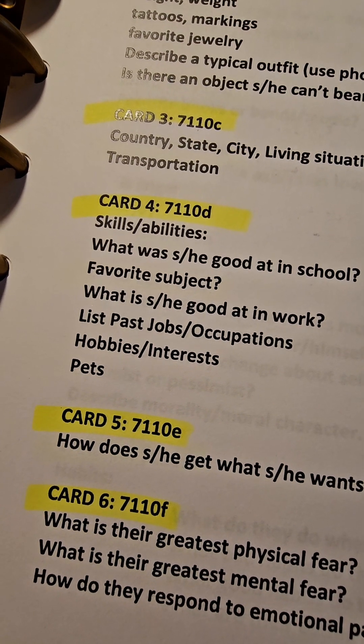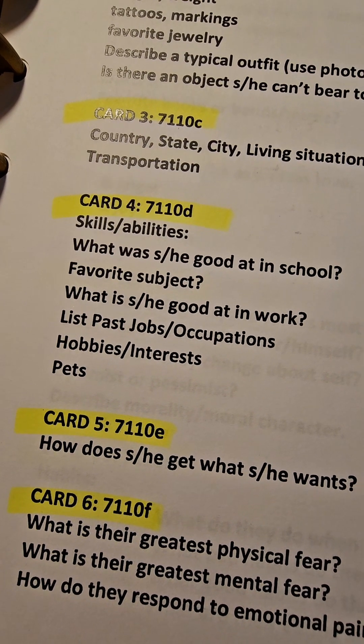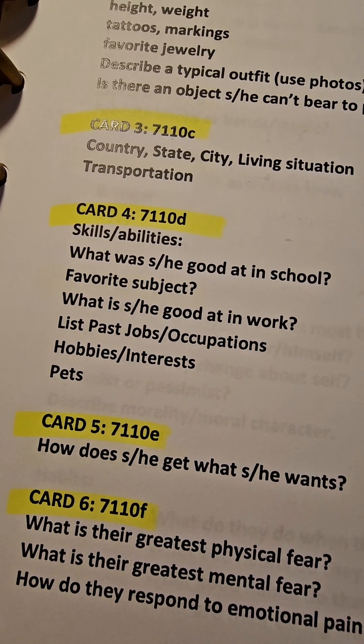Hello fellow anti-novelists, we are ready to move on in our character development to card number four, which is the D card: skills and abilities. What was this character good at, favorite subjects, et cetera? So some of the more personal details about this character.